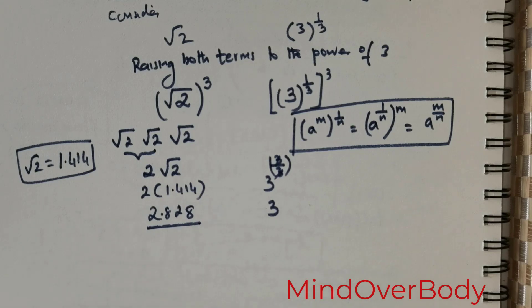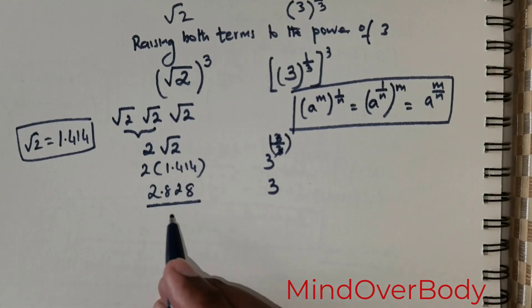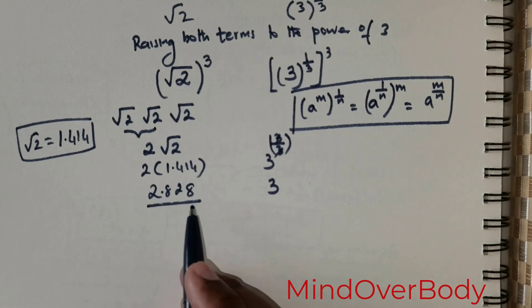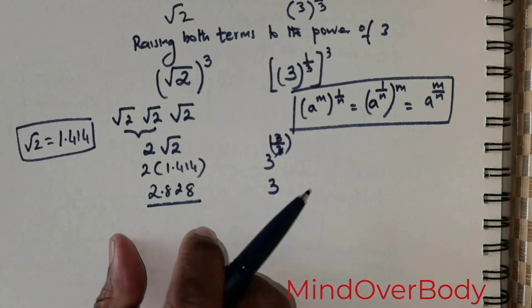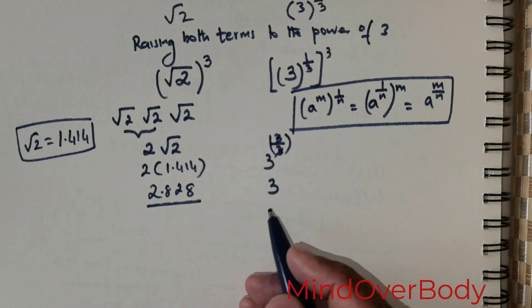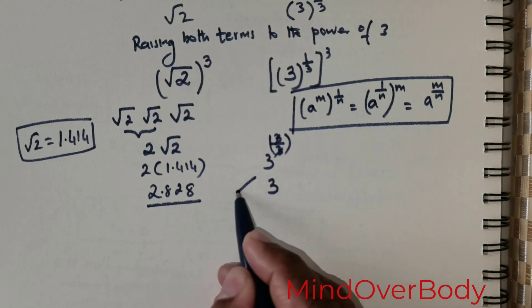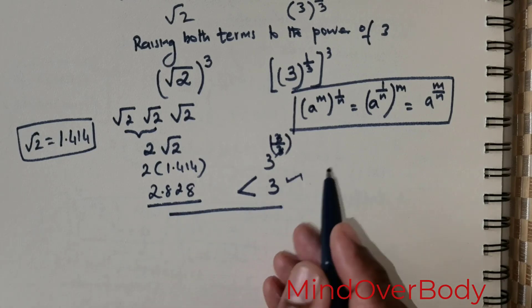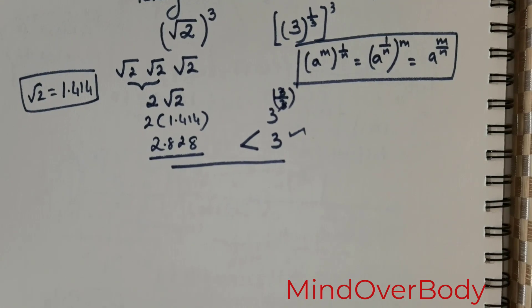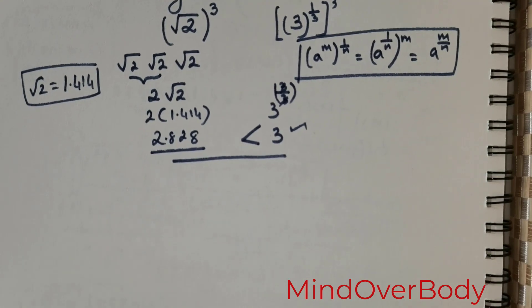So clearly you can see, no matter how many digits you are going to take, this value is not going to surpass 3. So clearly when you compare 2.828 with 3, which is greater? Clearly 3 is the largest number. So this is the solution.